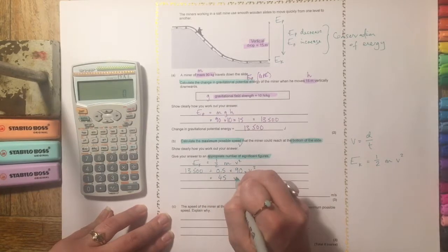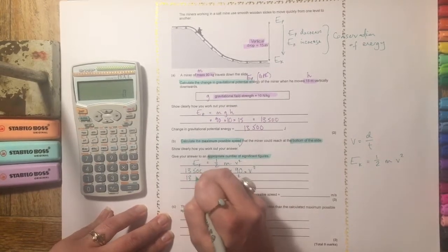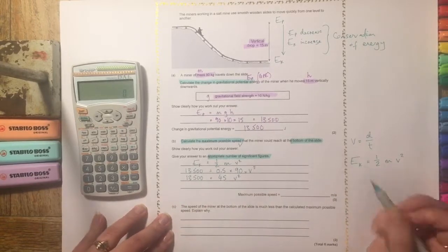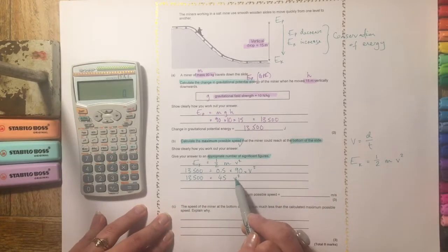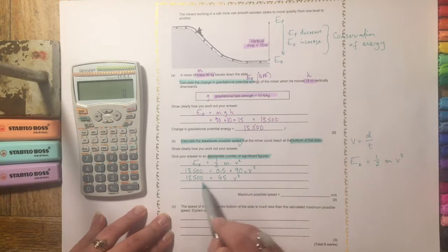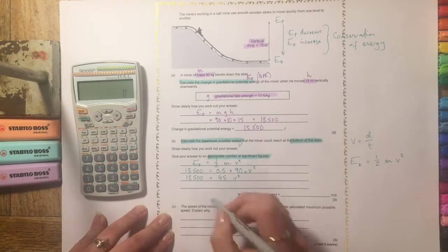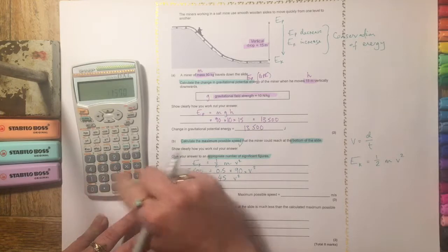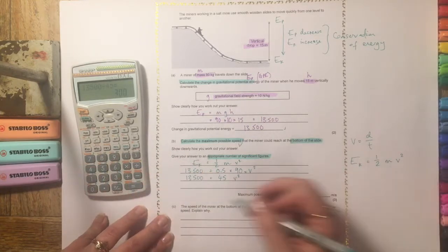So we've got 45v squared is 13,500. So we want to get v squared by itself. At the moment we've got 45v squared. So we're going to divide both sides by 45. So 13,500 divided by 45 gives us 300.